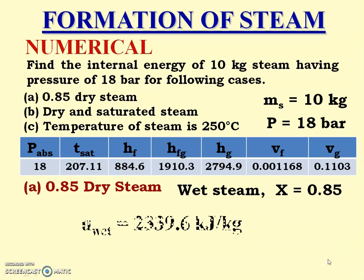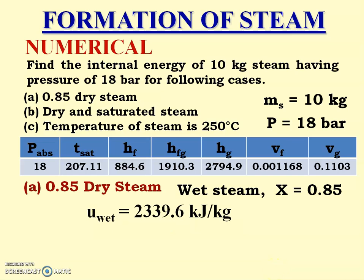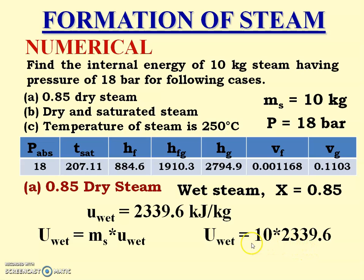Substituting all values, the specific internal energy of wet steam = 2339.6 kJ/kg. Since 10 kg of steam is given, total internal energy U_wet = mass × u_wet = 10 × 2339.6 = 23396 kJ.